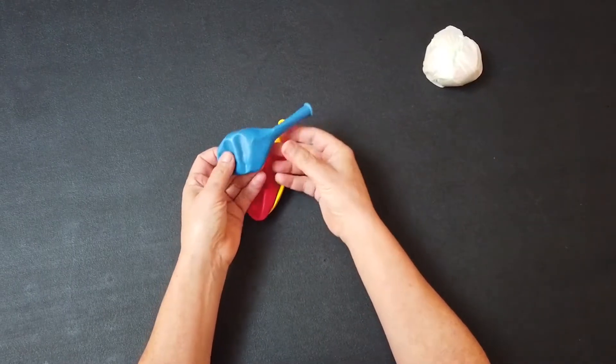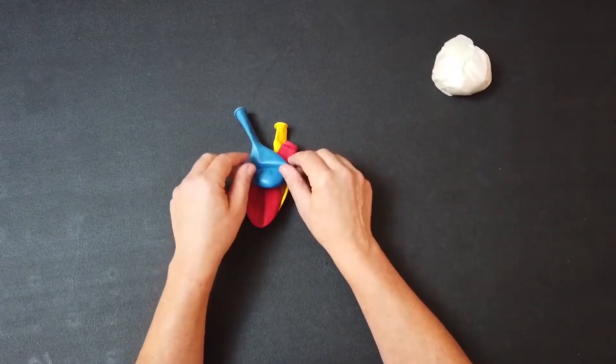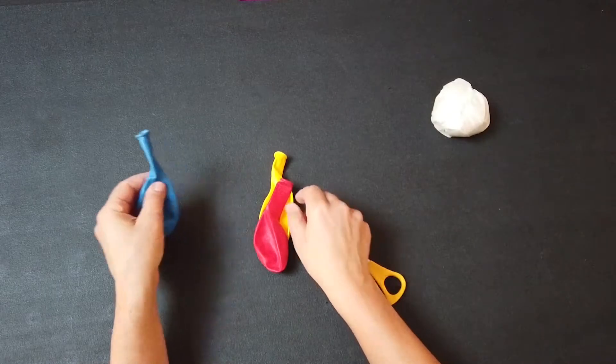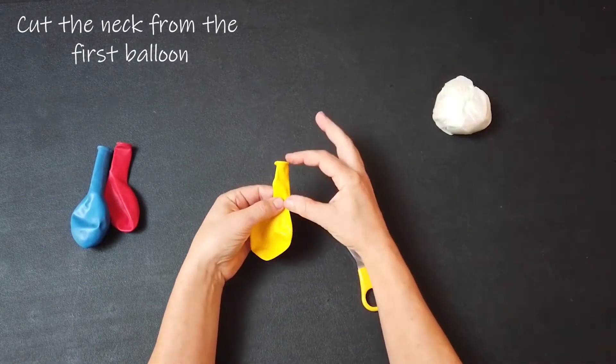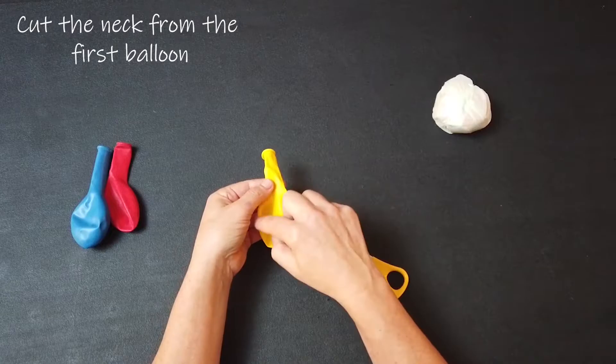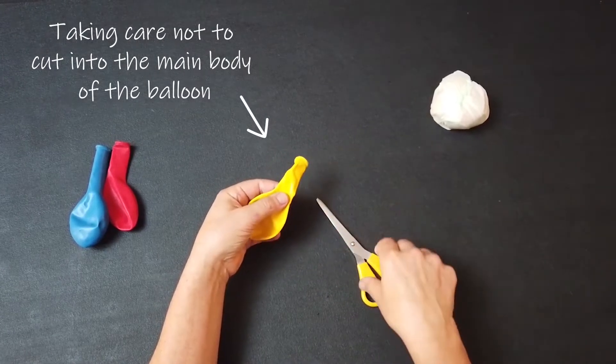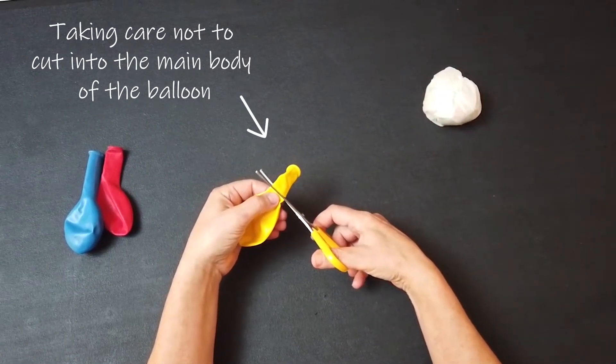Final element to make it look good and be strong are going to be three balloons. So you're going to take the first balloon that you're going to use and you're going to cut off the bit that you blow into. So not the round balloon bit, but the neck bit.